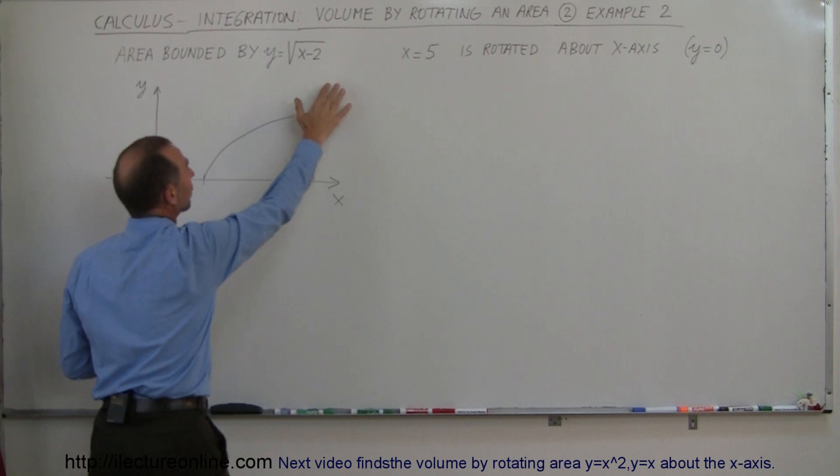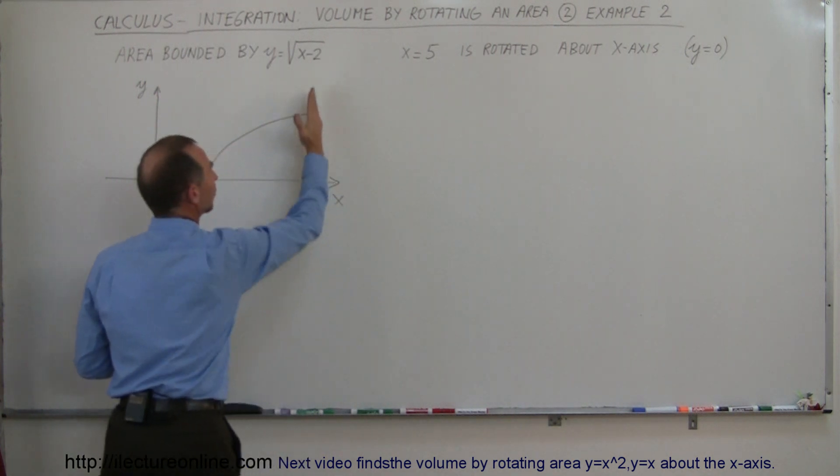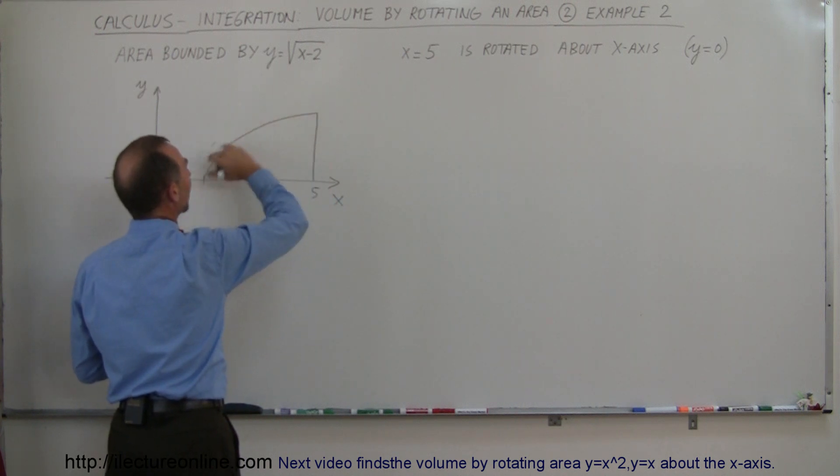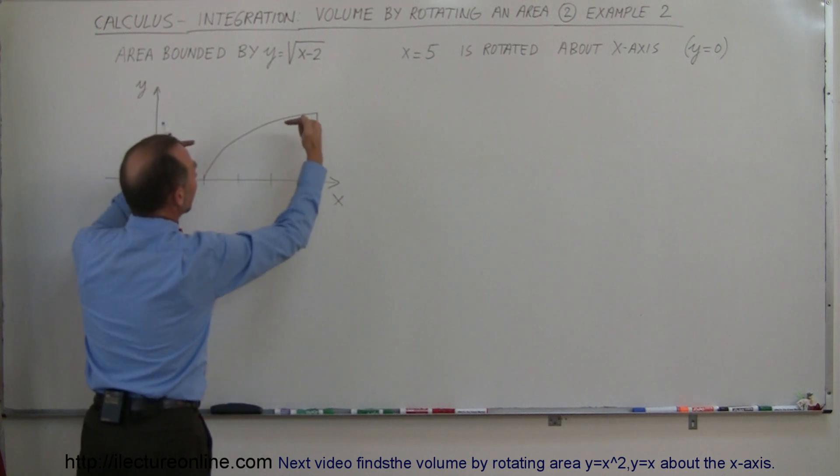We have y equals the square root of x minus 2, and x equals 5. x equals 5 is this line right there. So let's see, that's 3, 4, 5, and here's the equation y equals the square root of x minus 2.